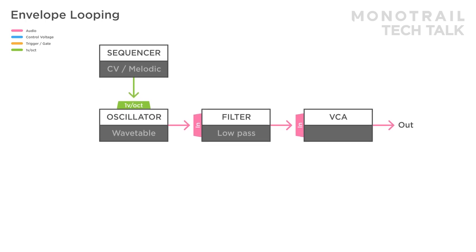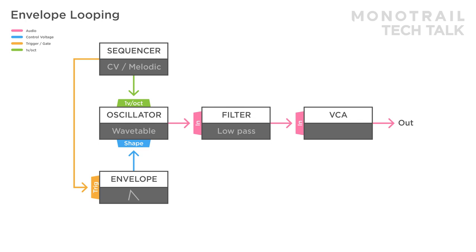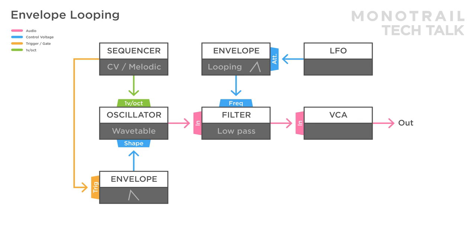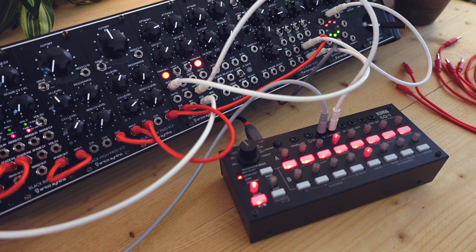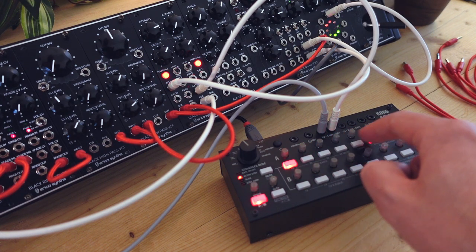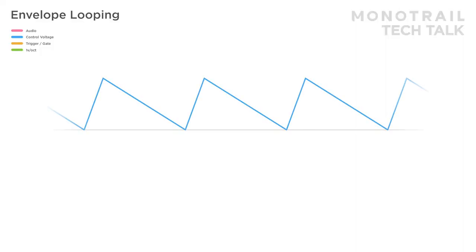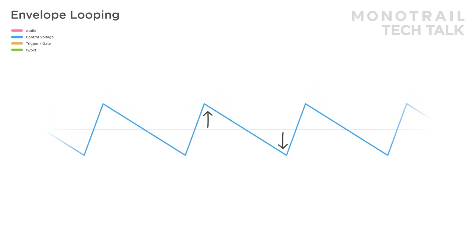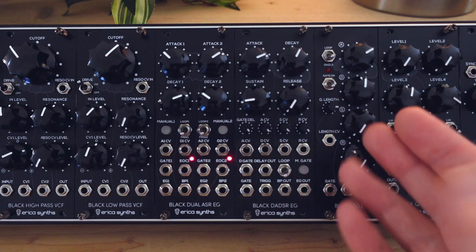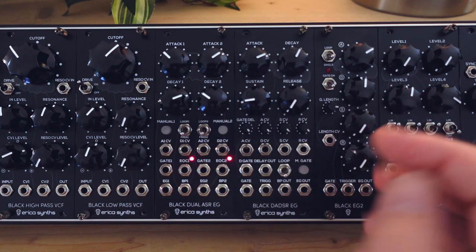Here's a simple voice with sequencer, triggering an attack decay envelope modulating the wave shape to create a clocked plucky sound. A second looping envelope is used to modulate the filter. An LFO is modulating the attack time of the looping envelope, creating variations in modulation speed and shape. Something to remember is that the output voltage range of a regular envelope is positive, meaning it changes the parameter you are modulating only in one direction. You need to mix the envelope with a negative offset voltage if you want classic bipolar LFO behavior.